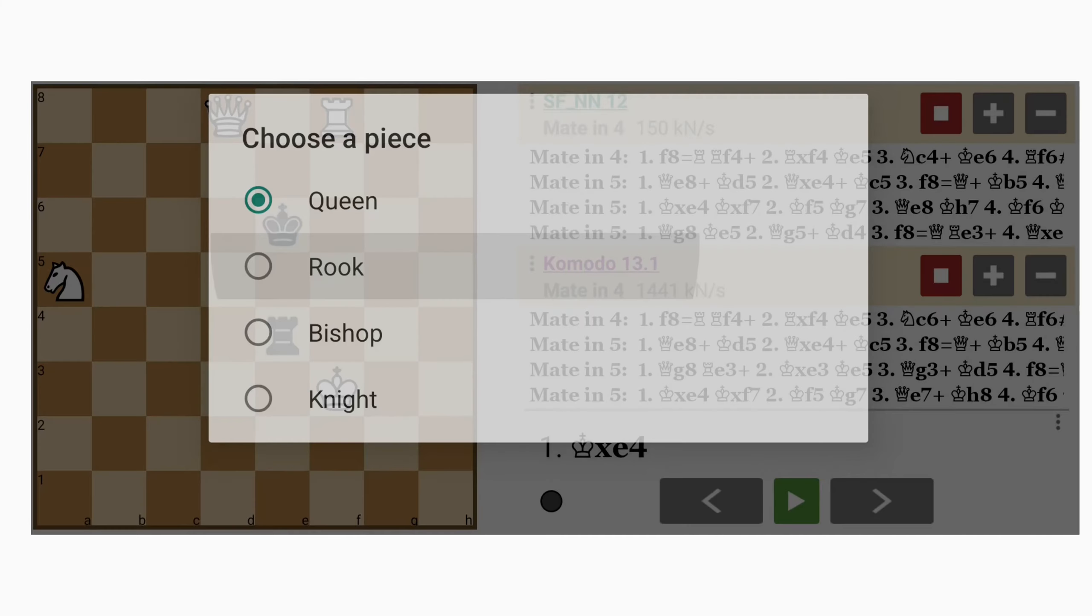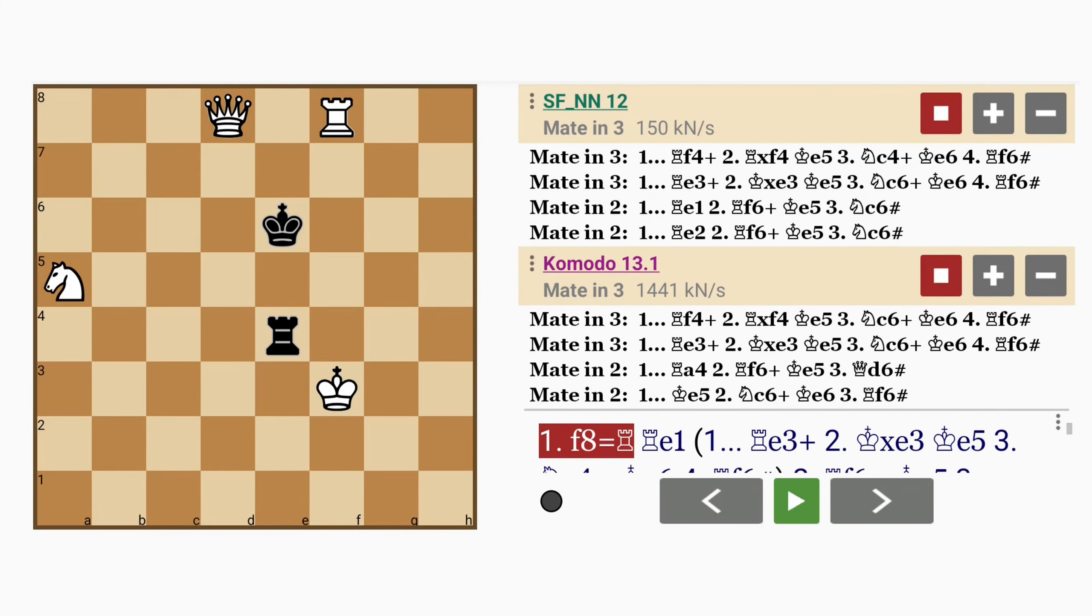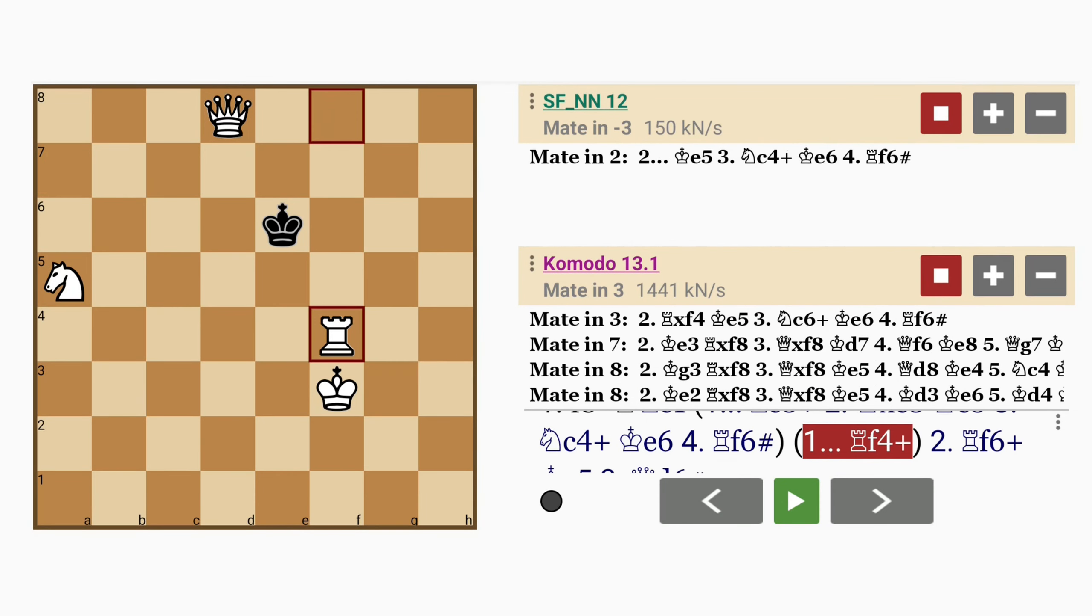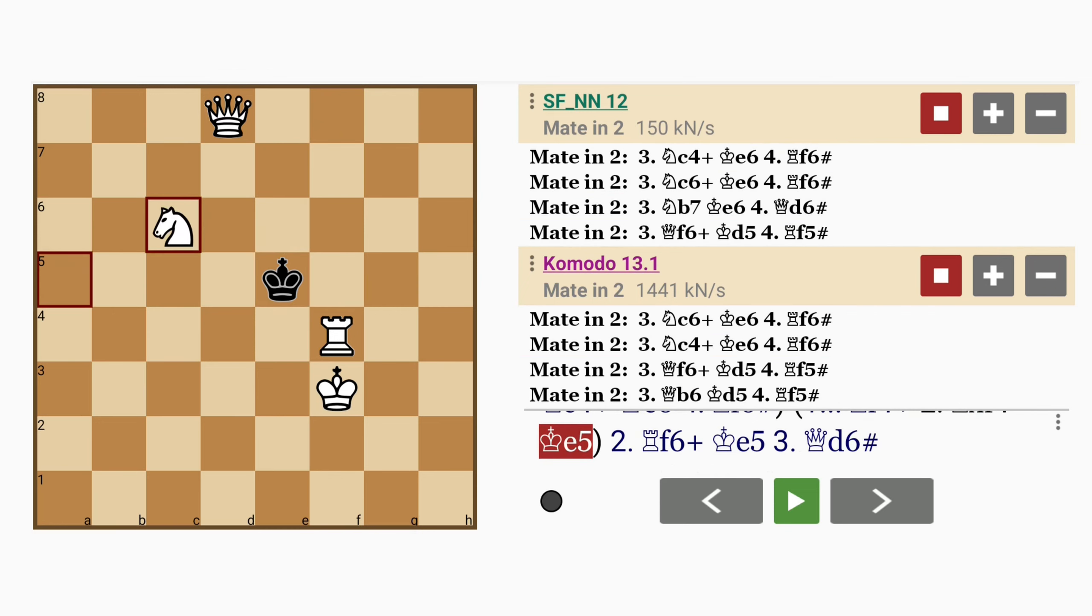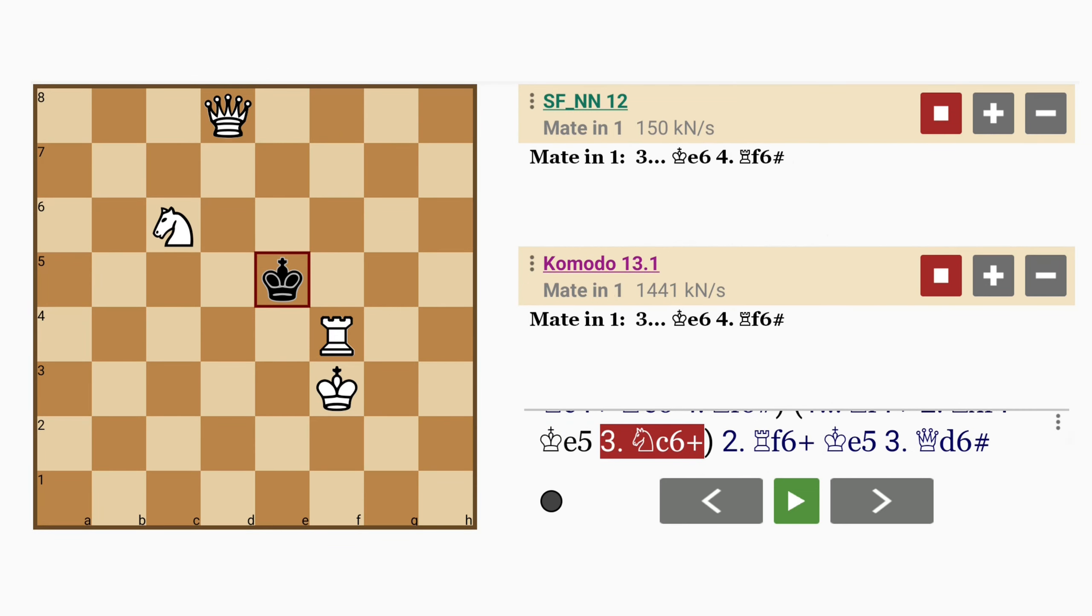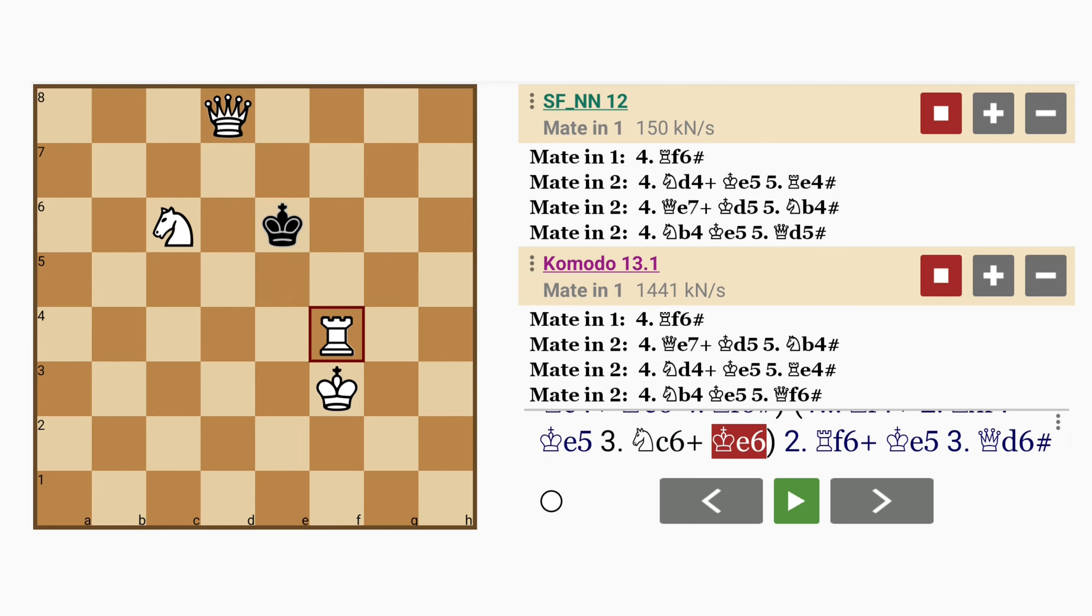On the other hand, with the underpromotion to rook, if rook to f4 check, rook captures rook and white can still go on to mate because after king to e5, knight to c6 check, king back to e6 and rook to f6 mates.